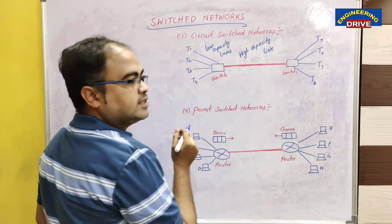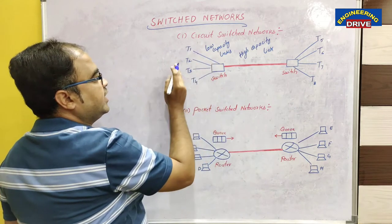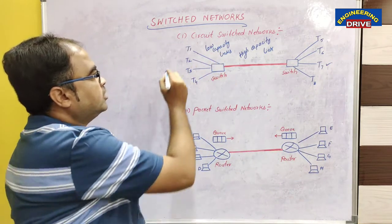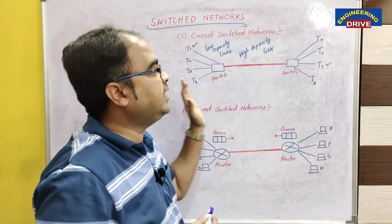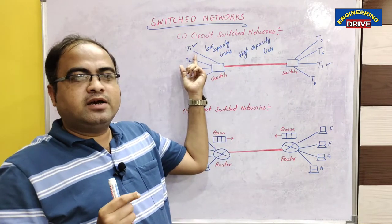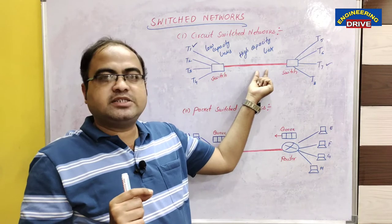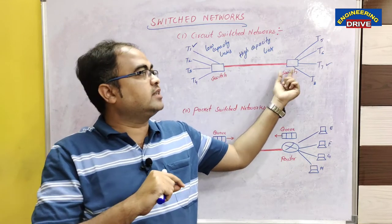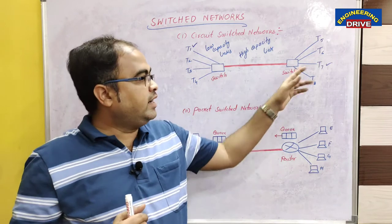What is the role of the switch here? Let's say telephone T1 wants to communicate with telephone T7. A user on T1 at the sender side wants to call a user on T7 at the receiver side. First, a request from T1 is sent to the switch. The switch transmits this request through the high capacity link to the switch at the receiver side, which then selects telephone T7 and passes the request to it so T7 can receive the call.